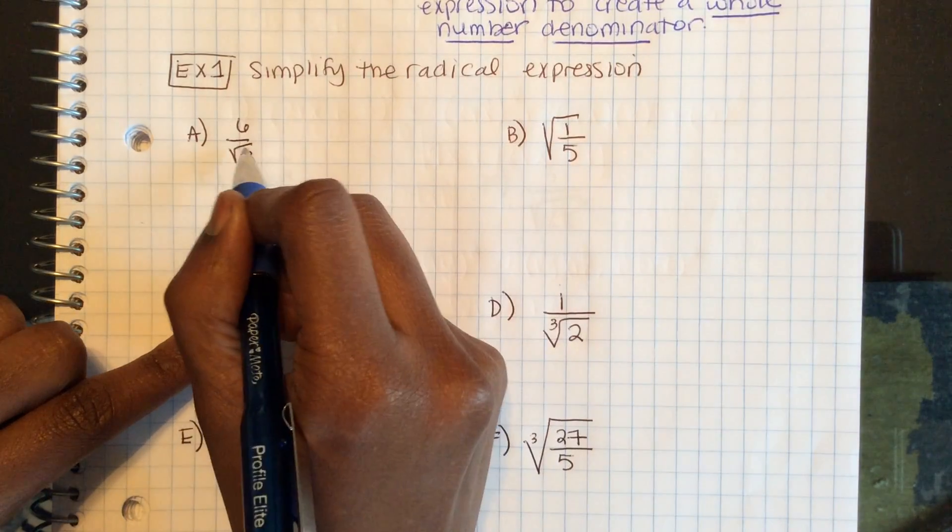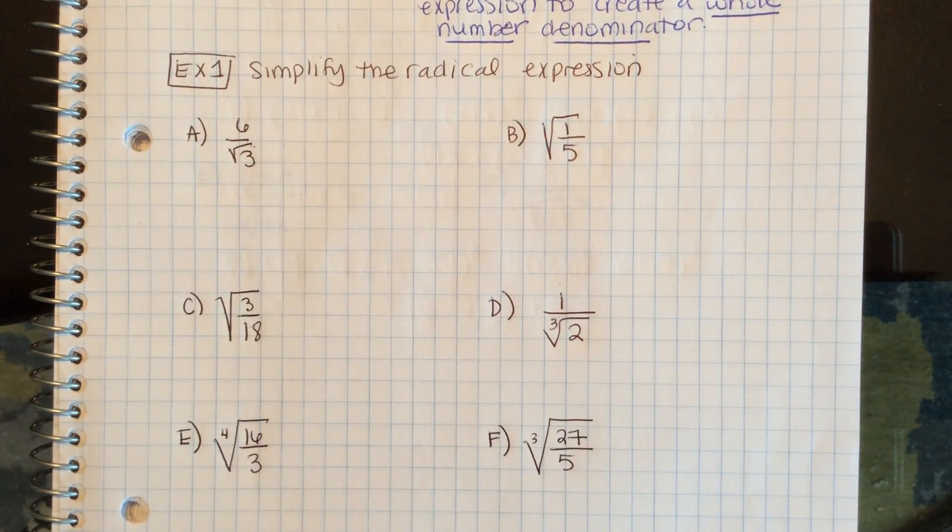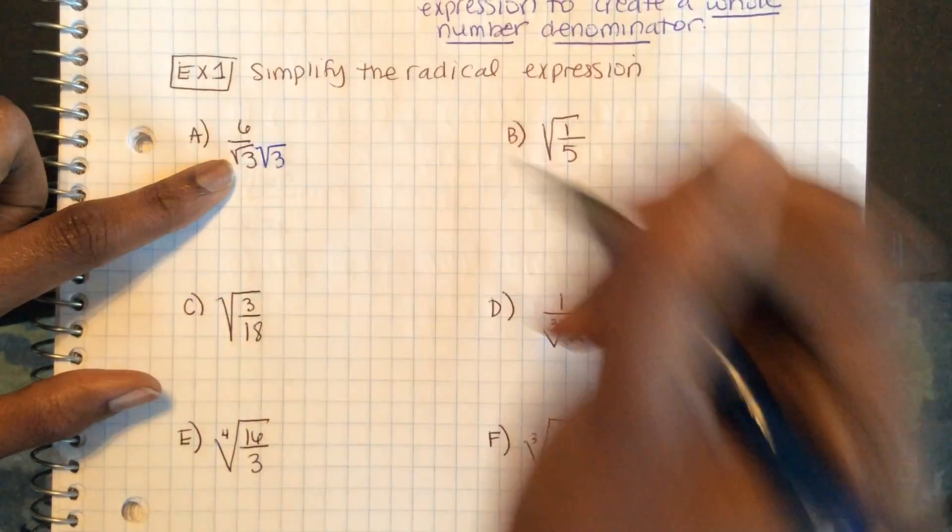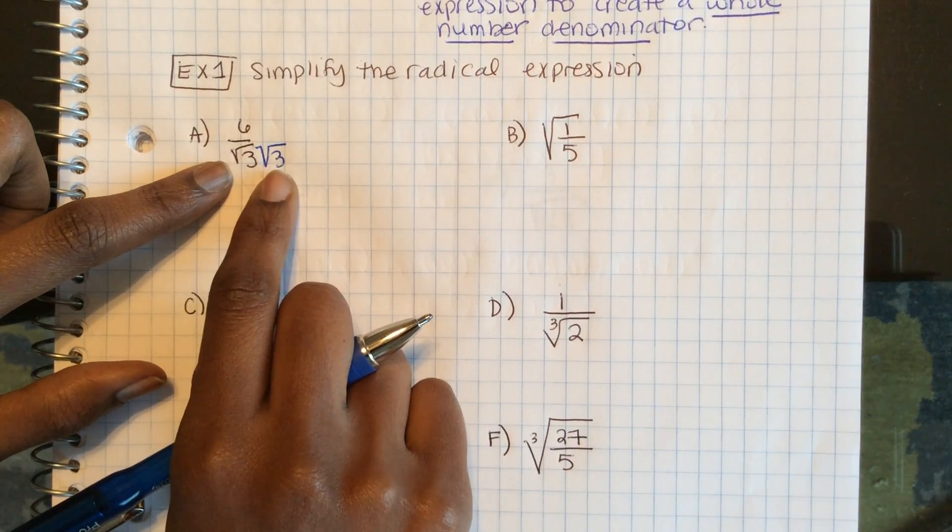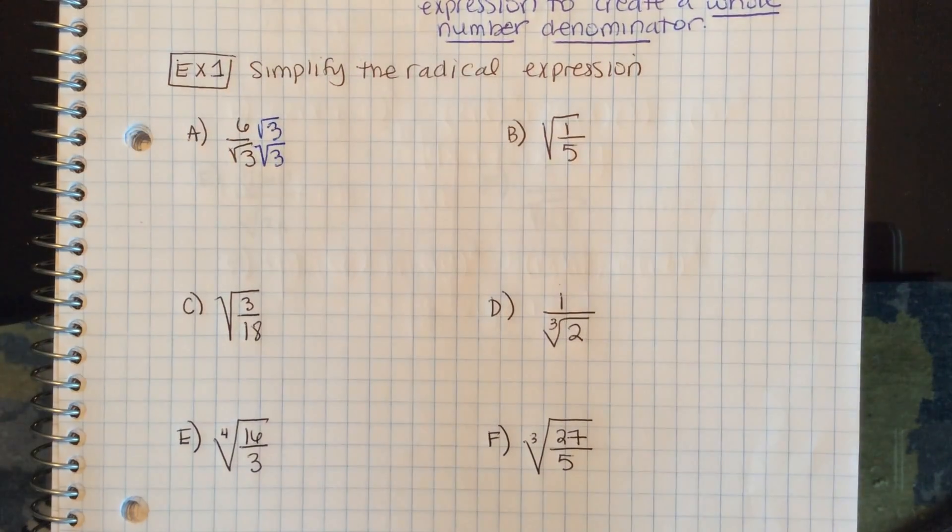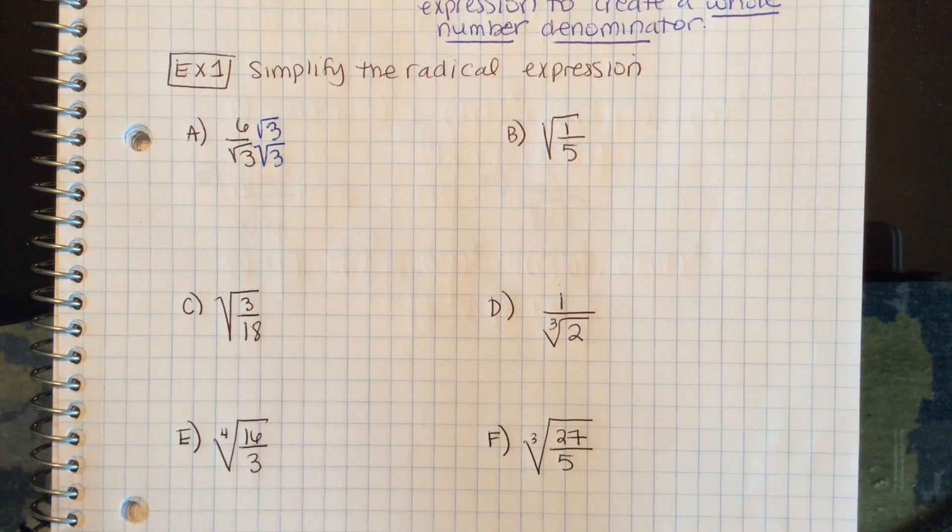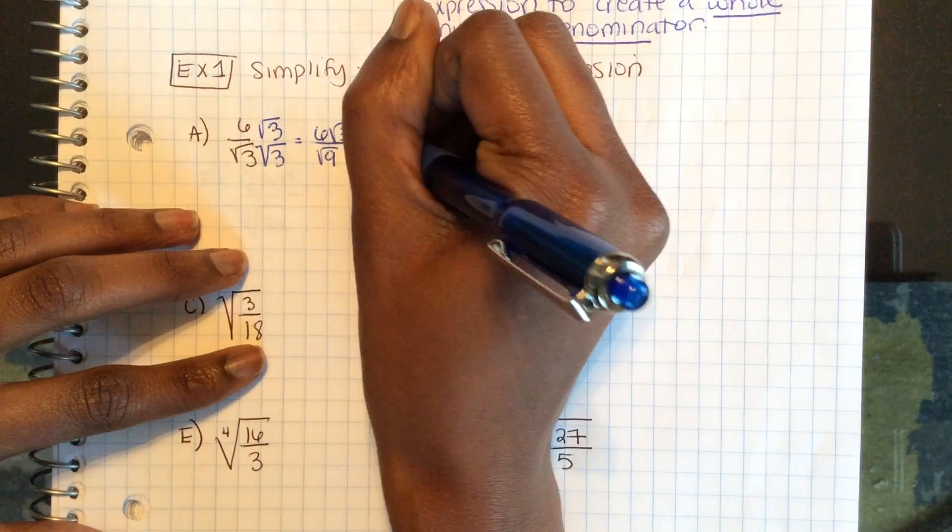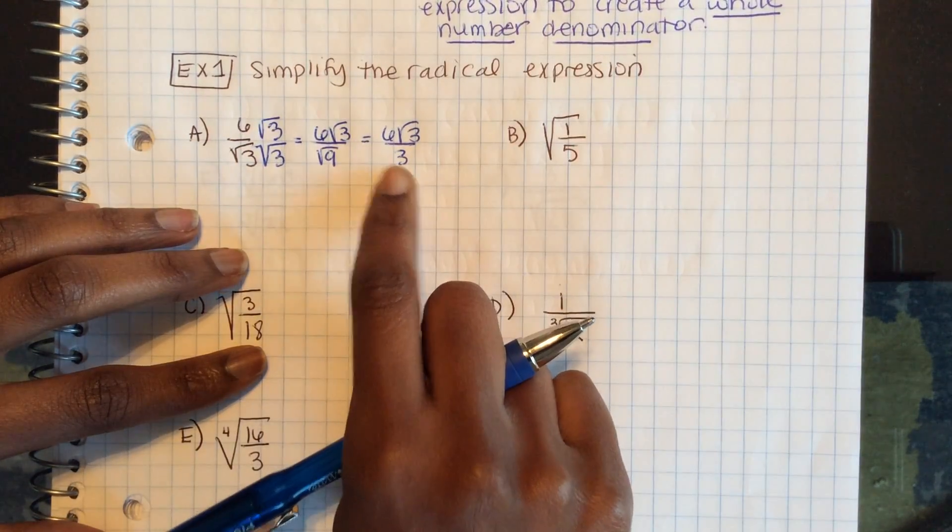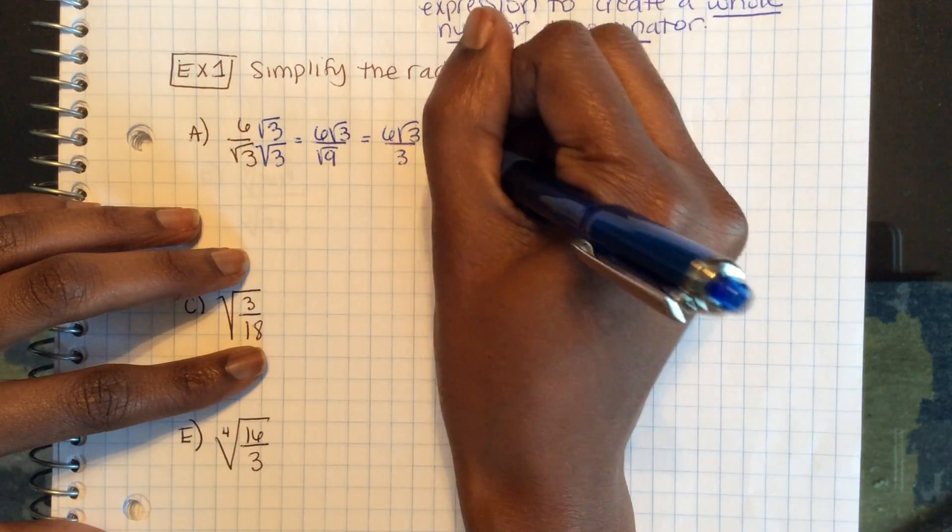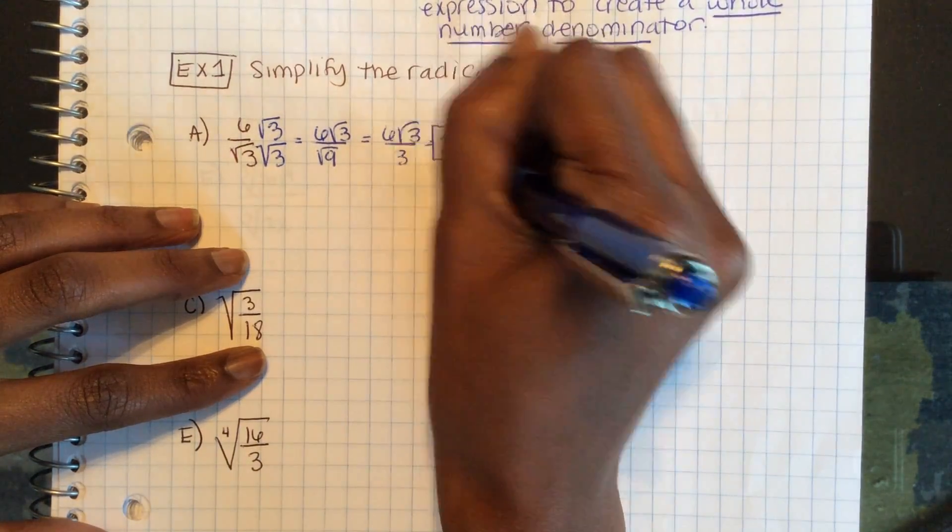So, first, in Part A, I see there's a radical in my denominator that is not simplified. In order to rationalize this denominator, I'm going to multiply my denominator by square root of 3, because that would make the square root of 9, which is a whole number. But if I multiply my denominator by that expression, I have to multiply my numerator by the same term to keep my fraction the same. So, that becomes 6 square root of 3 over square root of 9, which is 6 square root of 3 over 3, whole number. It's been rationalized. So, now, 6 divided by 3 becomes 2 square root of 3, and that is simplified because there is no radical in the denominator.